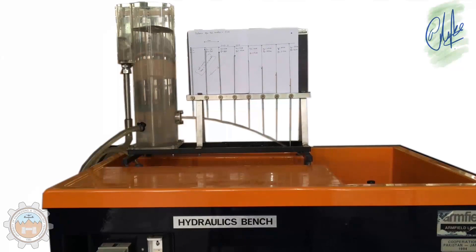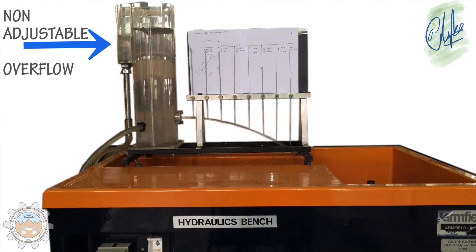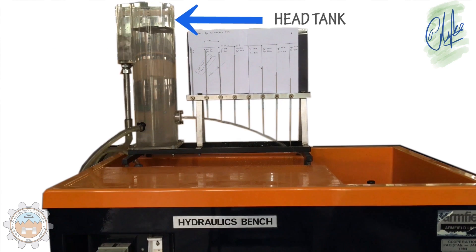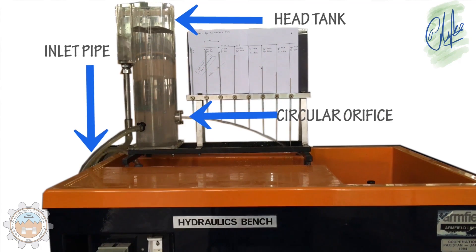Okay, so let's start by naming a few parts of this experiment. The first is the clamping board where we place our paper, the needles which touch the water jet surface, the non-adjustable overflow, the head tank where the water is being kept, and the inlet pipe and the circular orifice.